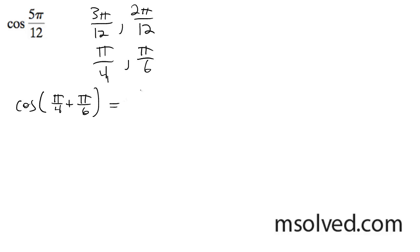And this is going to give us cosine of π over 4 times cosine of π over 6 minus the sine of π over 4, sine of π over 6.